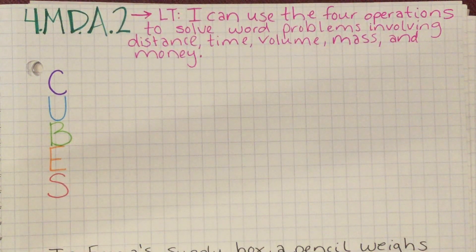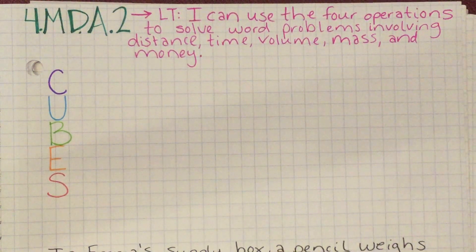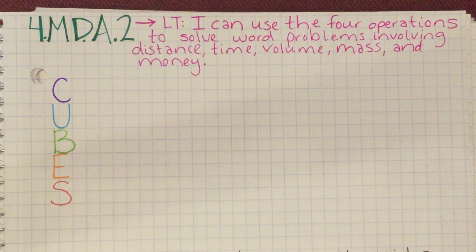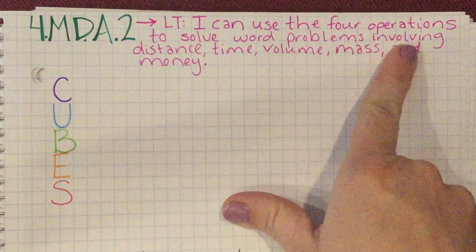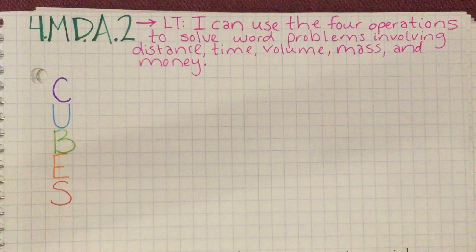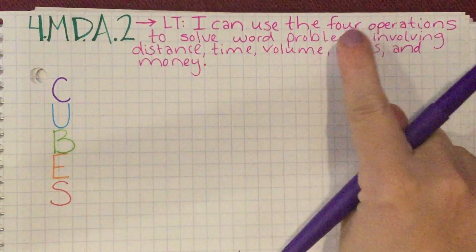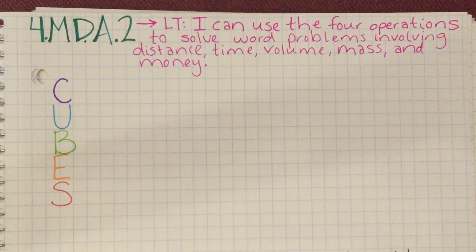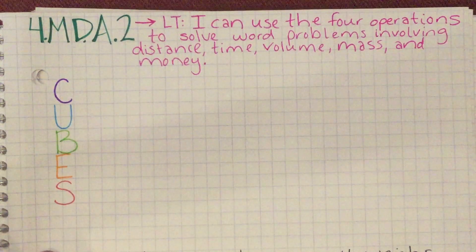Since we're going to be working with word problems this week, I want to show you a really awesome way to help you tackle those tricky word problems. One of the ways that we tackle tricky word problems, especially ones that use more than one of the four operations — maybe multiplying and adding, or dividing and subtracting, or multiplying and dividing — we've got to take some steps in order to be successful. One method we can use is the CUBES method.